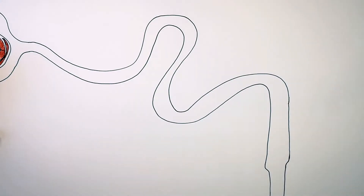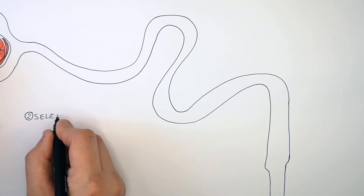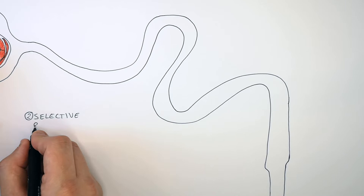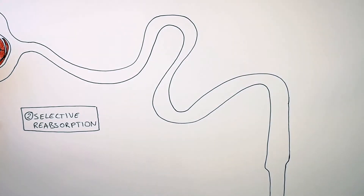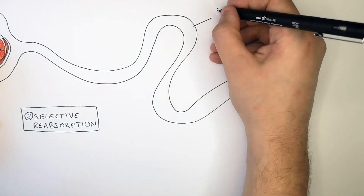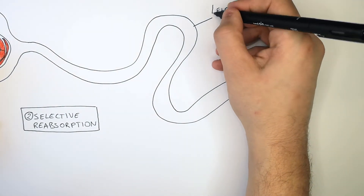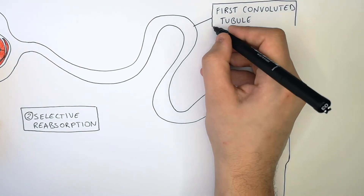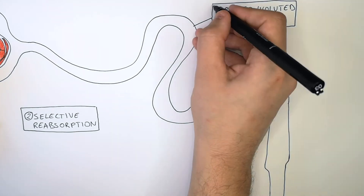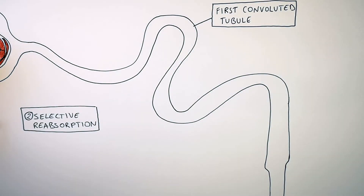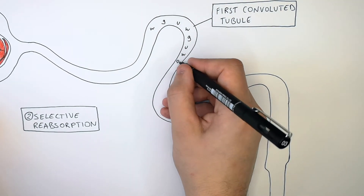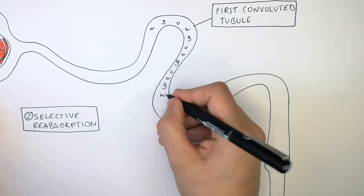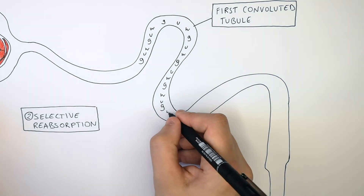After filtration, the next process that occurs inside the nephron is selective reabsorption. This process happens in the first convoluted tubule, after the Bowman's capsule and before the loop of Henle. The components of the filtrate inside the first convoluted tubule at this point include water, glucose, and urea.